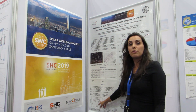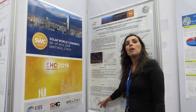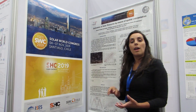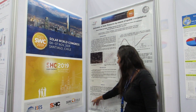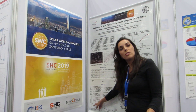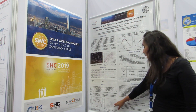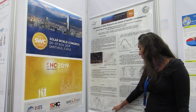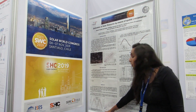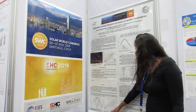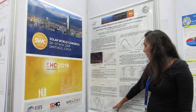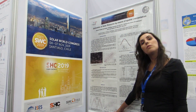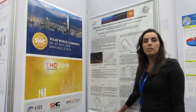Here, the graph shows the interpolated data alongside the weather station data. And here is the comparison of the global irradiance between the calculated values and the photovoltaic system measurements.